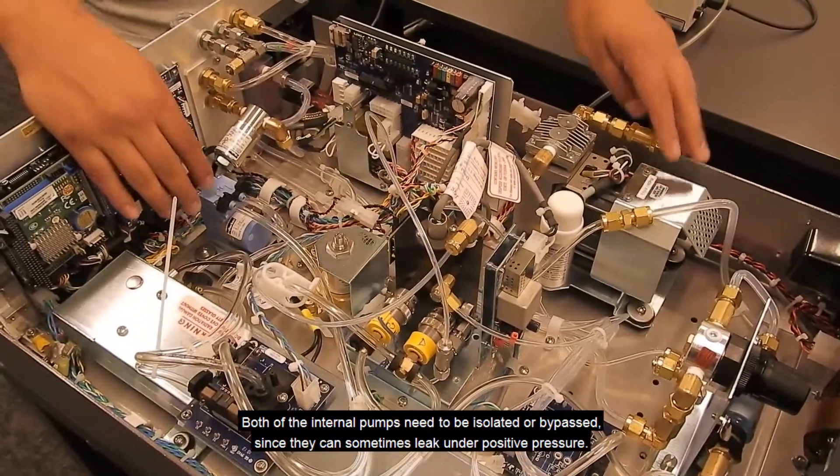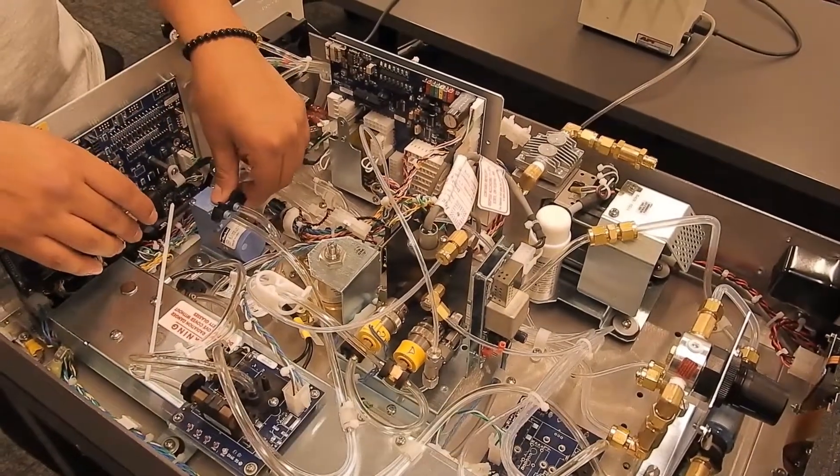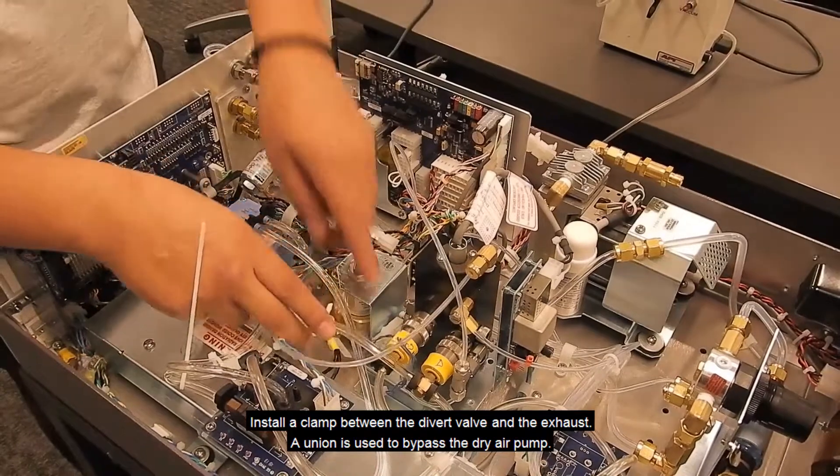Both of the internal pumps need to be isolated or bypassed since they can sometimes leak under positive pressure. Install a clamp between the divert valve and the exhaust.